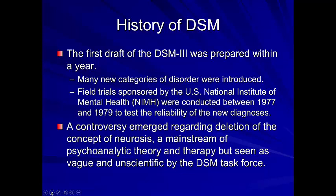The first draft of the DSM-3 was prepared within a year — a huge undertaking. They introduced many new categories of disorders and then conducted field trials sponsored by the NIMH between 1977 and 1979 to test the reliability of these new diagnoses. It was very controversial to delete the concept of neurosis, which had been seminal in DSM-1 and DSM-2 and a key point of psychodynamic psychotherapy. They felt this concept was very vague and unscientific, so they took it out.